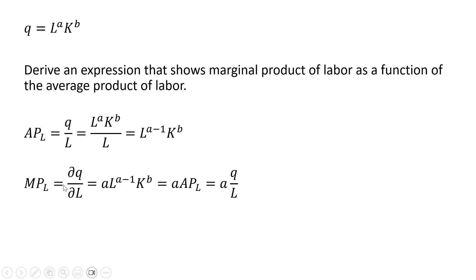Next let's get the marginal product of labor, so taking the partial derivative of this production function with respect to L. I'm going to bring down the exponent on the L term in front, then subtract 1 from that exponent on the L term, and we're left with this result. You'll notice that L raised to the A minus 1, all multiplied by K raised to the power of B, is just the average product of labor. So I'm going to make a substitution here — this part of the marginal product of labor just equals the average product of labor.